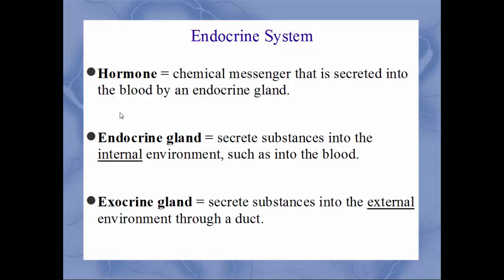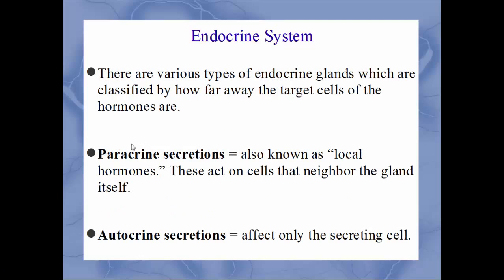The official definition of a hormone: these are chemical messengers secreted into the blood by an endocrine gland. Endocrine and exocrine mean two very different things. An endocrine gland secretes substances into the internal environment, such as the blood — 'endo' means inside. The opposite is the exocrine gland, which secretes substances into the external environment through a duct, like sweat or lactation.